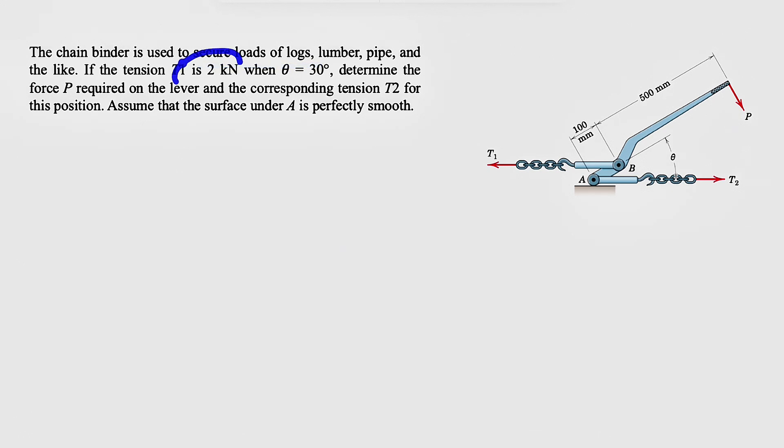We know the tension T1 is 2 kN, and theta is 30 degrees. We need to determine the force P required on the lever and the corresponding tension T2 for this position. Assume that the surface under A is perfectly smooth, meaning we do not consider any friction at that surface.